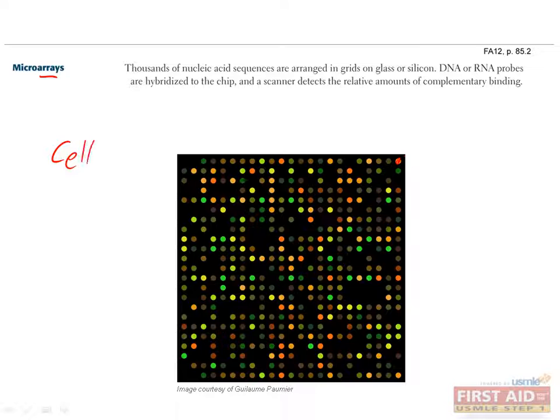The way you use a microarray is first you take a cell or tissue of interest, dissolve it, and isolate the RNA. If you use RNA, label that RNA with a fluorescent tag which allows you to detect it later, and then wash the RNA across the chip. If a particular gene is expressed at a high level, the RNA from that gene will be more abundant, and more probes in the chip that are complementary to that gene will bind to its corresponding RNA.